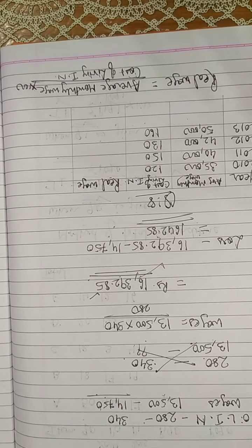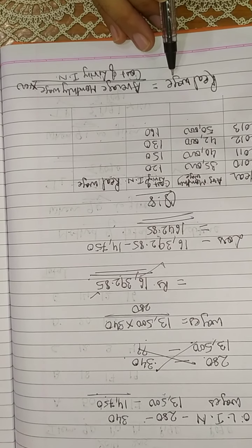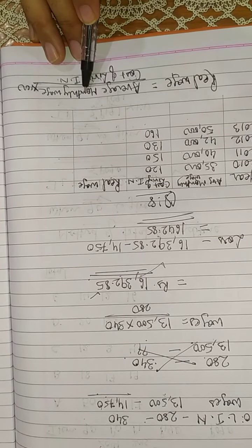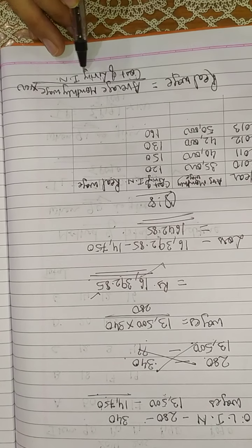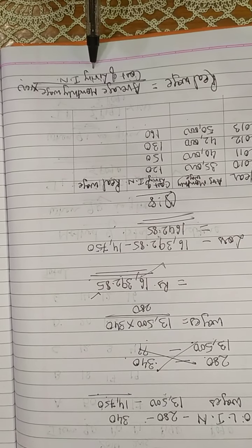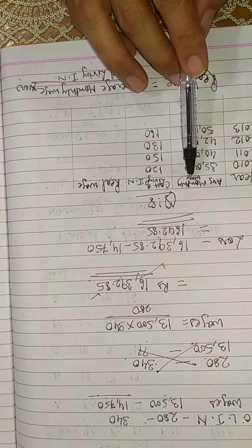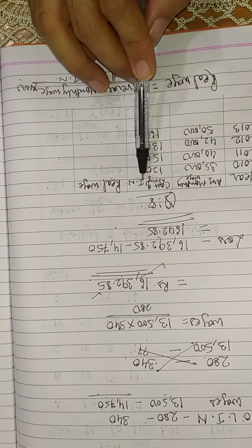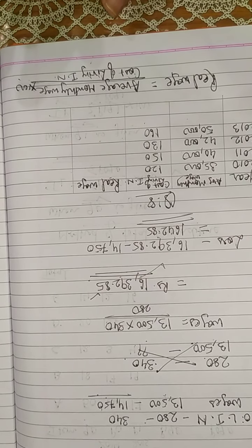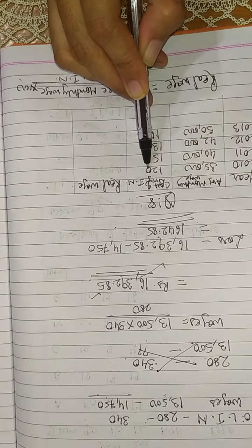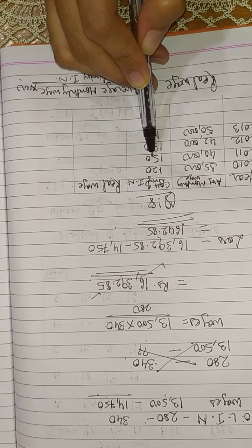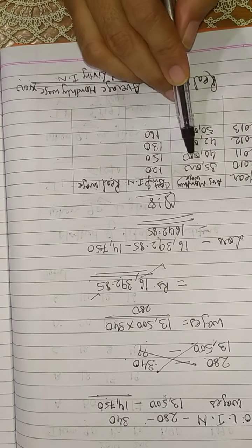Now simply you have to learn the formula of real wage. The formula of finding real wages: average monthly wages upon cost of living index number into hundred. Wages upon index number into hundred. Simply this is the formula. So what you have to do, wages divide by index number, and then you have to multiply by hundred and you will get the answer.